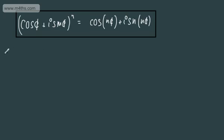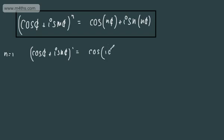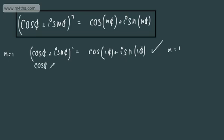So what we'll do — we'll start off and take n equal to 1. If that's the case, what we're going to have is cos θ plus i sin θ to the power of 1, which is going to be equal to cos of 1 lot of θ plus i sin of 1 lot of θ. Quite clearly, we can see that this holds true when n equals 1.